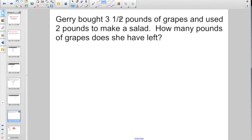Jerry bought three and a half pounds of grapes, used two pounds to make a salad. How many pounds of grapes does she have left? She started with three and a half, and she used two. Do you think you have it? Are we adding, subtracting, or dividing this time? I'm hoping you know that this is a subtraction problem, and we're going to have one and a half cups left, because three and a half minus two, that's going to give you one and a half, right?